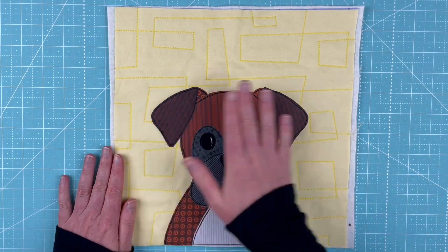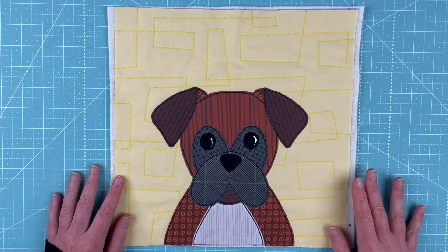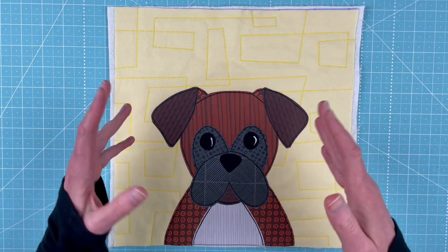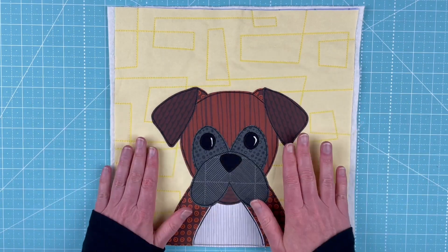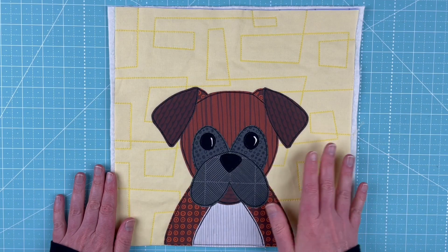Okay, in this video I'm going to show you how to assemble the boxer block. Here you can see he's all finished. This is actually the introduction to two different videos - one is going to show you how to do it with a light box and the other is going to show you how to do it if you don't have a light box.